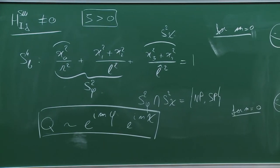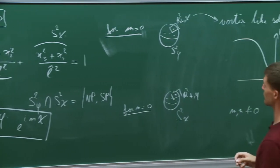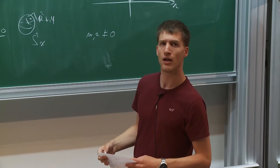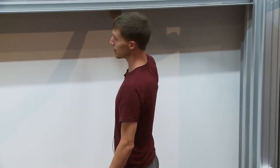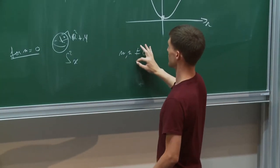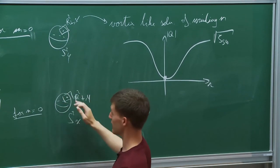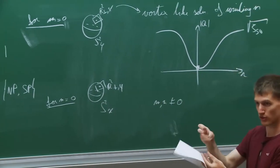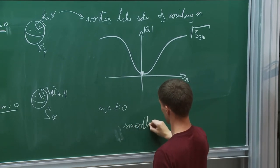When m and n are both non-zero, you have vortex-like behavior on this plane and vortex-like behavior on the other plane. Where these two two-spheres intersect — at the two poles — they are glued together in some smooth way. The details of the gluing are somewhat complicated but can be found in the paper. These are smooth solutions.